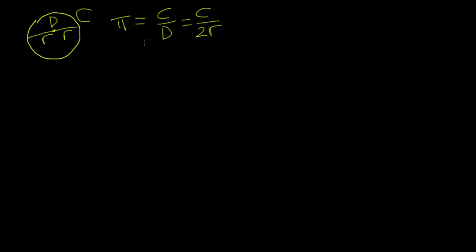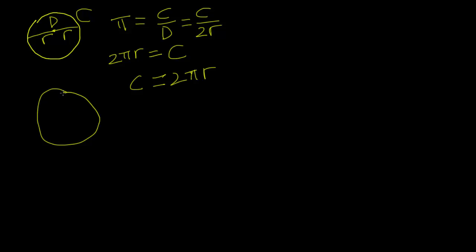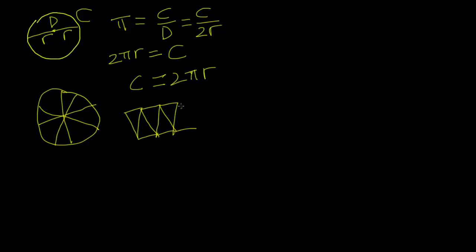If you multiply both sides by 2R, you get 2πR equal to the circumference of a circle. Now, if you divide the circle into pieces and rearrange the pieces of the circle and write it out like so, you have something that looks like a rectangle. And if you slice the circle into an infinite number of pieces, then you will have something very close to a rectangle.